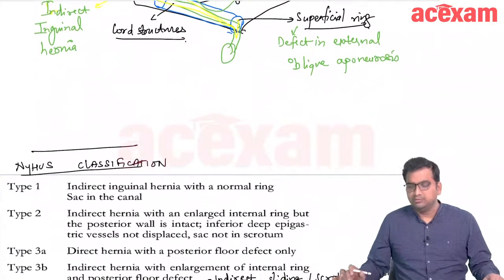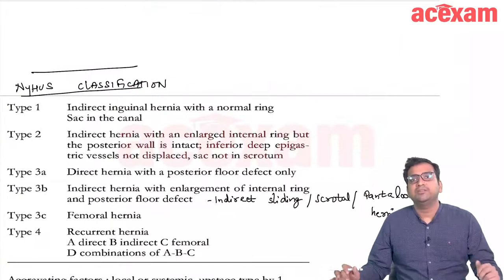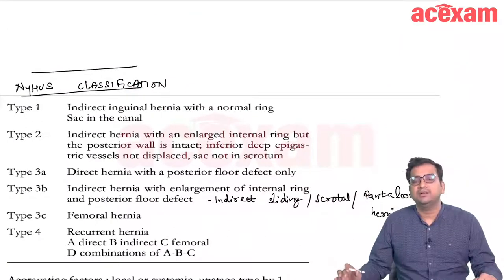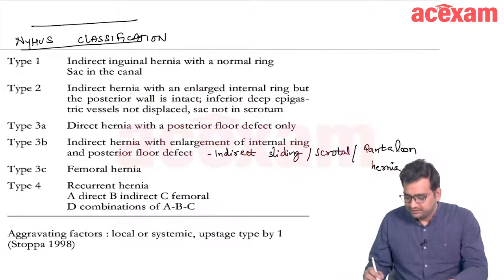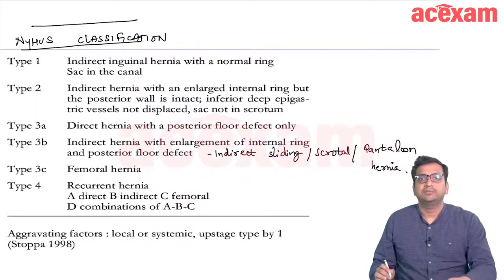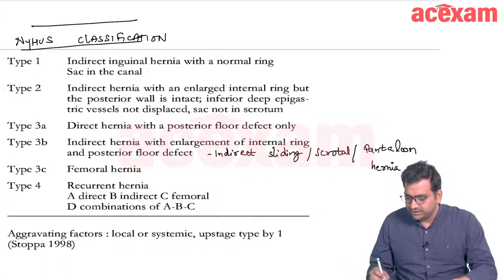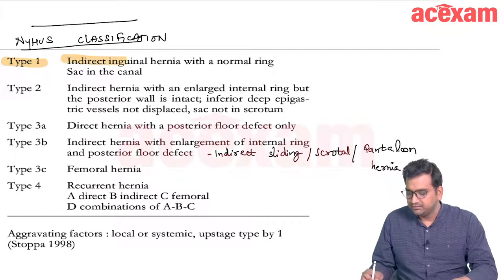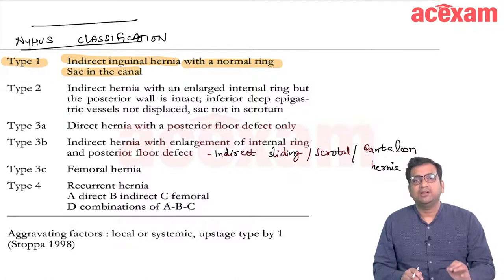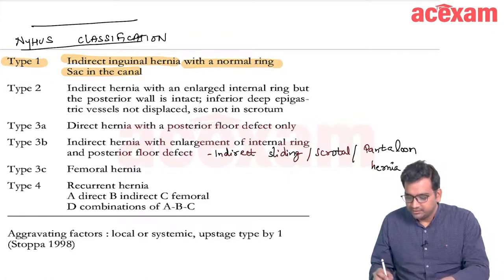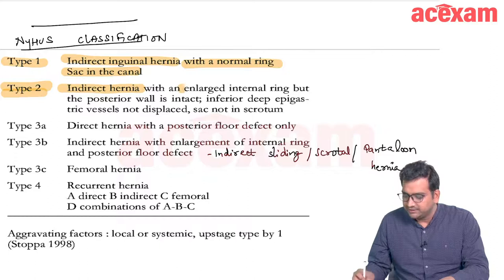Now we will go to the classifications of inguinal hernia. There are two important classifications: Nyhus classification and Gilbert's classification. In Nyhus classification, inguinal hernias are divided into four types. Type 1 is indirect inguinal hernia with a normal ring. Type 2 is indirect hernia with an enlarged internal ring.